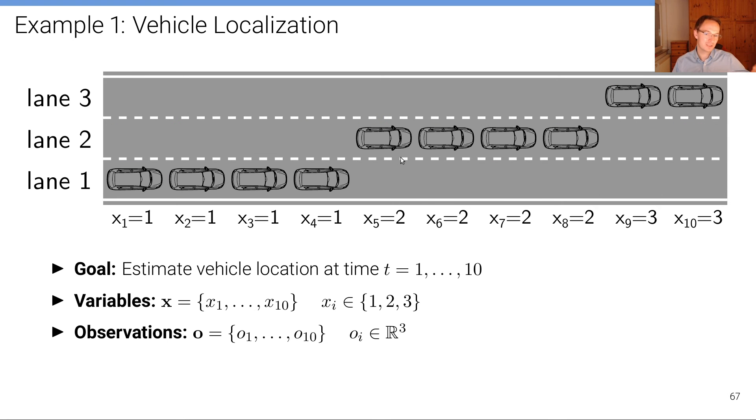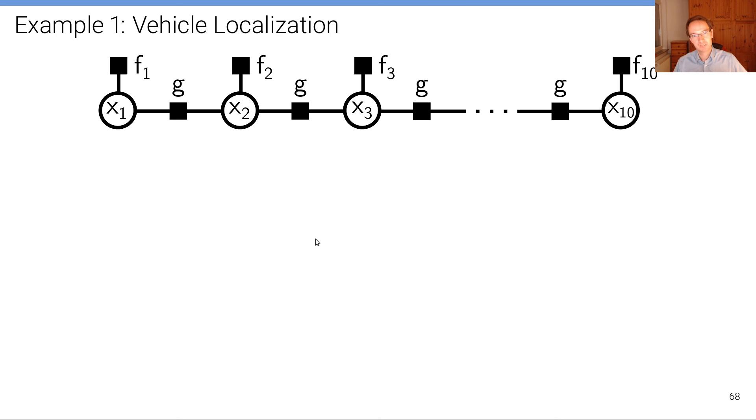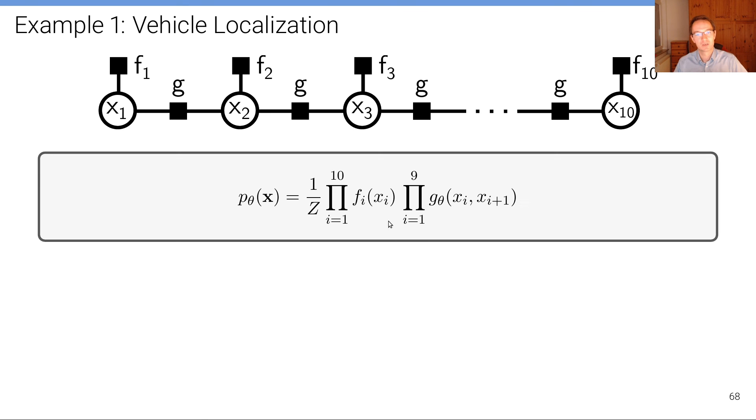The factor graph of this problem looks like this: we have the unaries that specify or that are determined by the perception model—the observations—these are called f. These are different here, f1 to f10, because we have different potentials, different observations at each time step. But then we have a g that's the same and that's connecting nearby time steps x1 and x2, x2 and x3. So it's a pairwise potential that connects to x2.